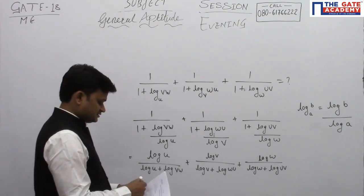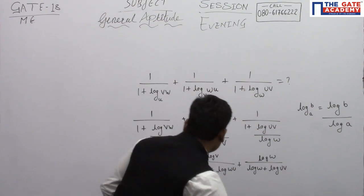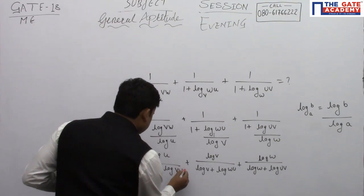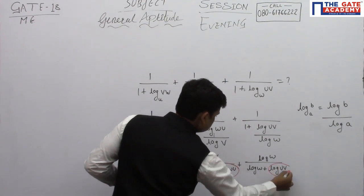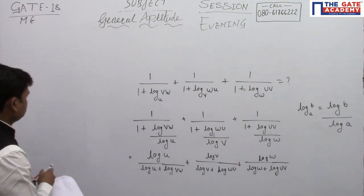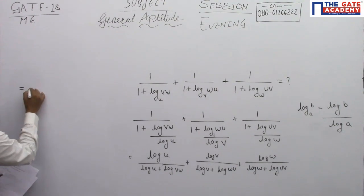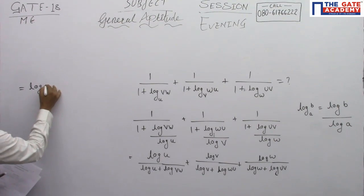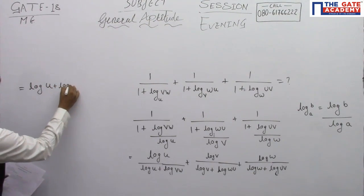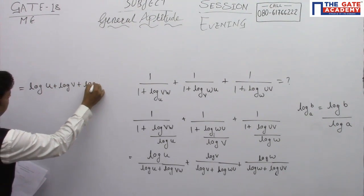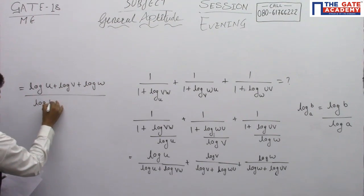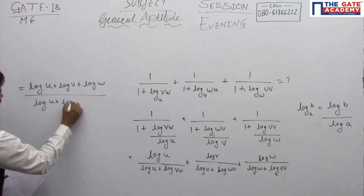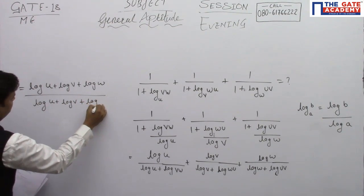So now after this, what we can do, we can split this. So what will happen, the entire thing will become log U plus log V plus log W upon a common denominator, which is log U plus log V plus log W, which will cancel out.